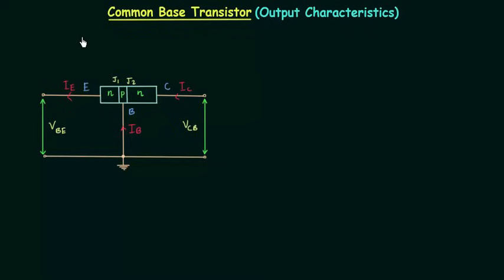In the previous lecture I explained the early effect and we obtained the input characteristics of the common base transistor. In this lecture we will obtain the output characteristics of the common base transistor.